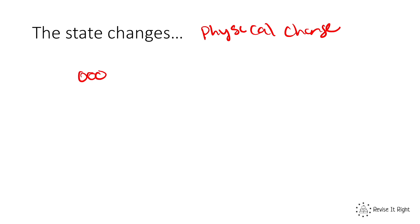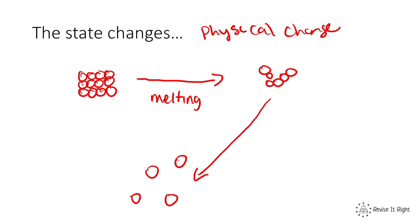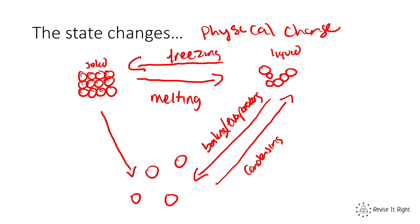We're going to start with a solid. To get that solid into a liquid is called melting. From a liquid to a gas is called boiling or evaporating. To get it back from a liquid to a solid is called freezing. To get it from a gas back to a liquid is called condensing. And from a solid straight to a gas, we call it sublimation.